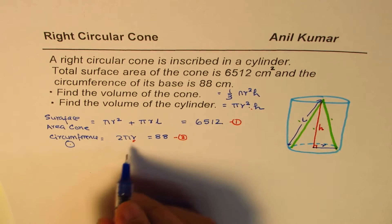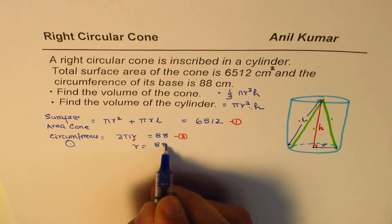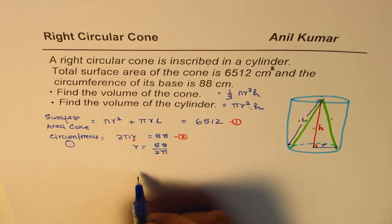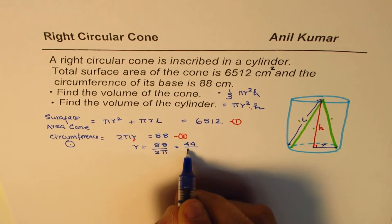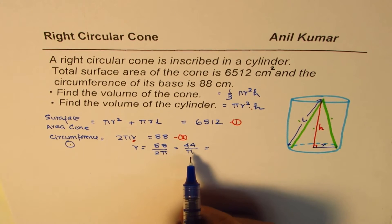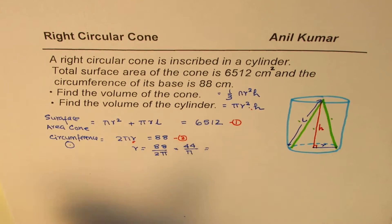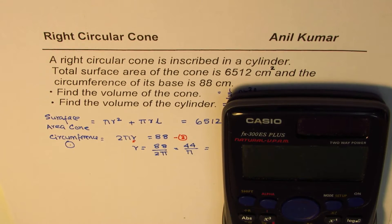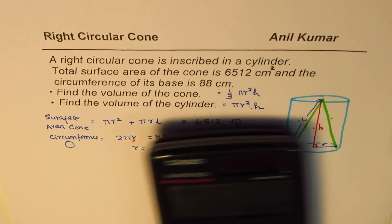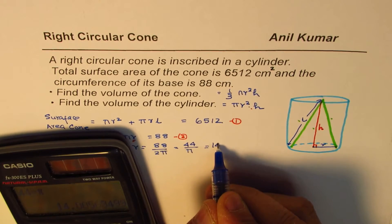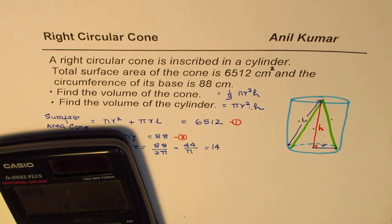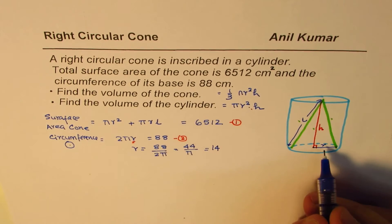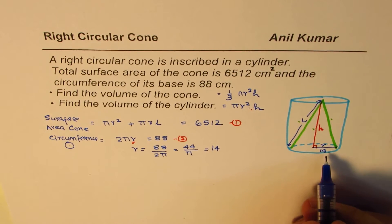So let us isolate R from equation 2. We have 2π R = 88, so R = 88 ÷ (2π) = 44 ÷ π. Converting to decimal: 44 ÷ π ≈ 14.0056, so we take R ≈ 14 centimeters. Let's call this equation 3.